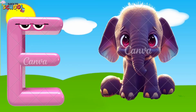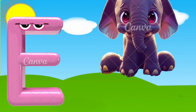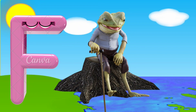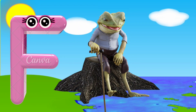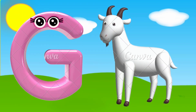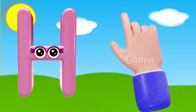E is for elephant, e, e, elephant. F is for frog, f, f, frog. G is for goat, g, g, goat. H is for hand, h, h, hand.